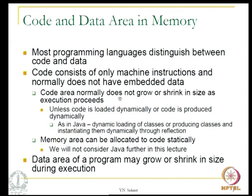It is a good idea to keep data and code separate even when the program executes on a machine. For example, the code area does not grow or shrink in size as execution proceeds, whereas the data area can. However, Java has dynamic loading of classes and a facility to produce classes during runtime using reflection and then creating objects of that class, so these features actually increase the code size.